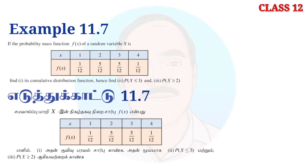If the probability mass function f(x) of a random variable X takes values 1, 2, 3, 4 with probabilities 1/12, 5/12, 5/12, and 1/12 respectively, then find the cumulative distribution function. Hence find the probability of X less than or equal to 3, and the probability of X greater than or equal to 2.